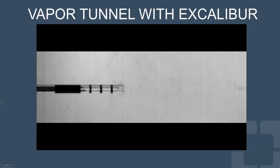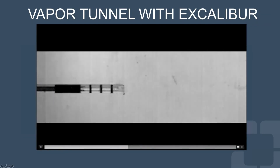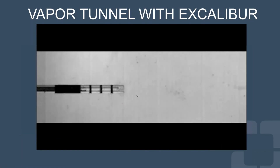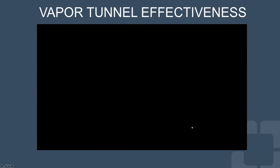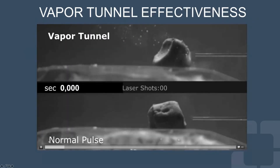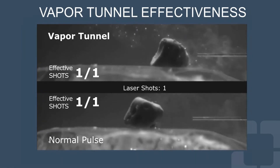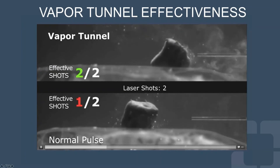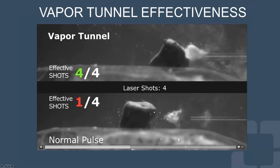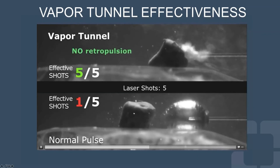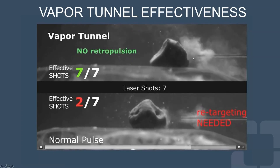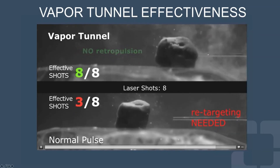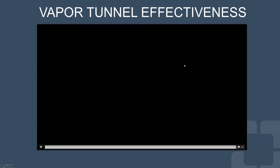Here's a video illustrating how the vapor tunnel works with the Excalibur fiber. You can see the pulse generates an elongated bubble, and the fiber tip is recessed from the sheath. Another video compares a normal pulse versus a vapor tunnel pulse: in the lower video, there is significant retropulsion for each pulse, and once the stone moves away, you lose effective shots with no more fragmentation. With the vapor tunnel effect, the stone stays put and you don't have to retarget — nine out of nine shots are effective versus only a fraction with standard pulsing.